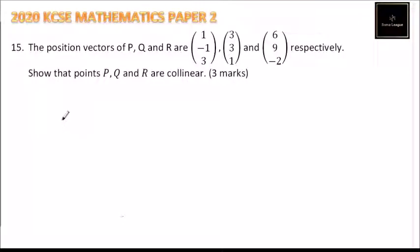This is question number 15, 2020 KCSE Mathematics Paper 2. It says the position vectors of P, Q, and R are (1, -1, 3), (3, 1), and (6, 9, -2) respectively. Show that points P, Q, and R are collinear. You get three marks.